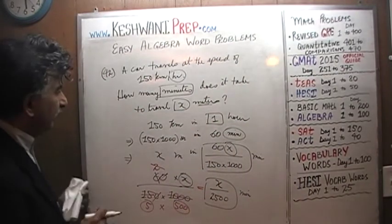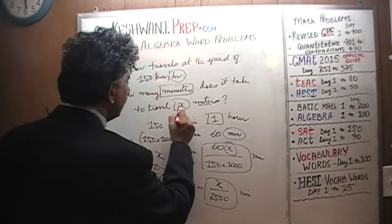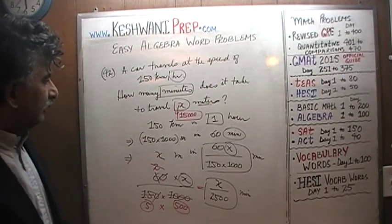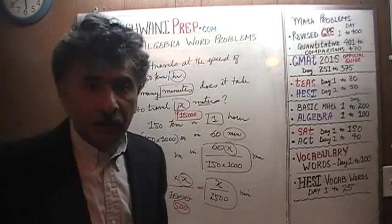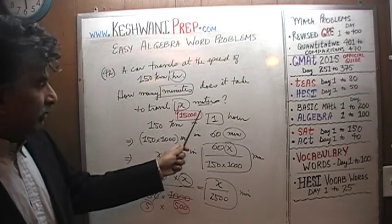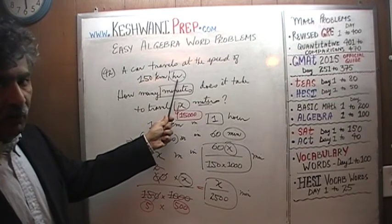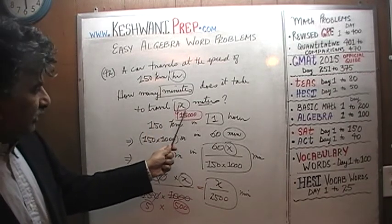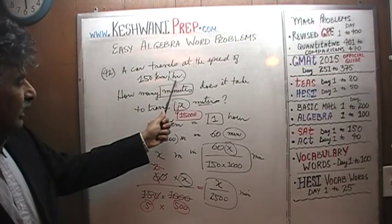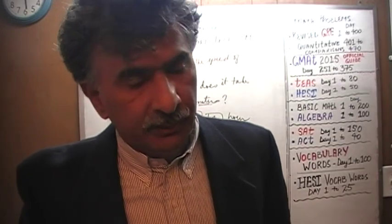I'm going to plug in 15,000 meters — let's do it with a red pen so you can see it. 15,000 meters is the same as 15 kilometers. We're going at 150 kilometers per hour, so if 150 kilometers takes one hour, then 15 kilometers — which is 15,000 meters — should take a tenth of an hour. A tenth of an hour is six minutes.